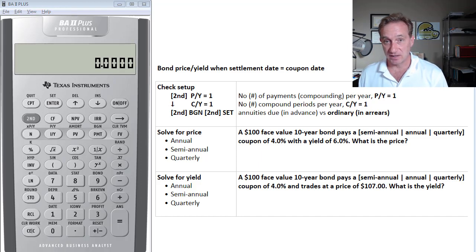My previous video looked at realistic scenarios where we price a bond on a settlement date that's in between the coupon dates. Now I'll look at unrealistic scenarios, which are much more common on a financial exam like the FRM and CFA.